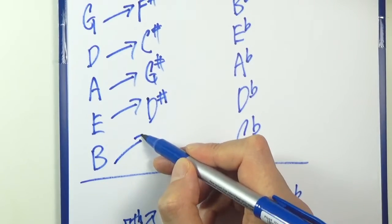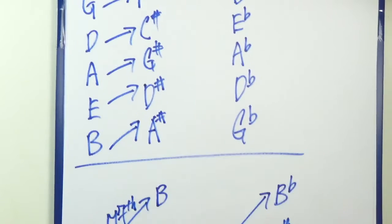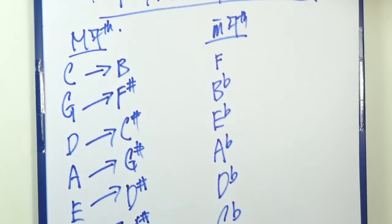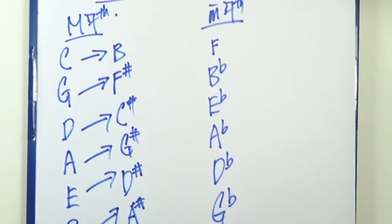So B, what about B? That should be an A sharp. So that's how you obtain your major 7th interval. You do so by counting backwards.